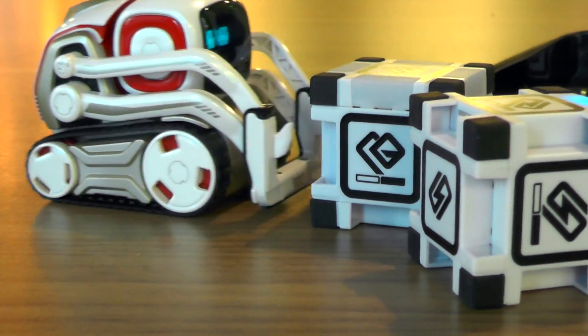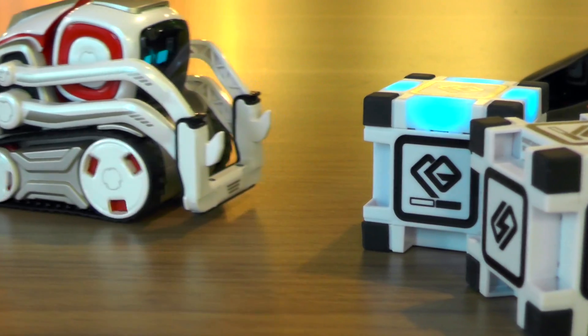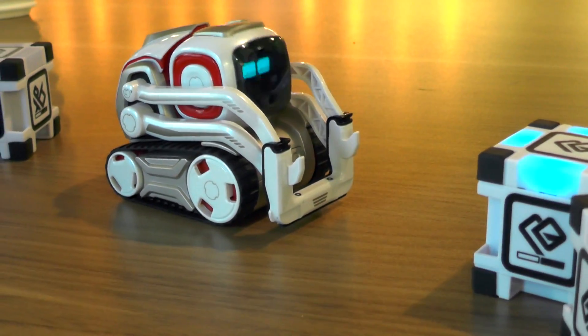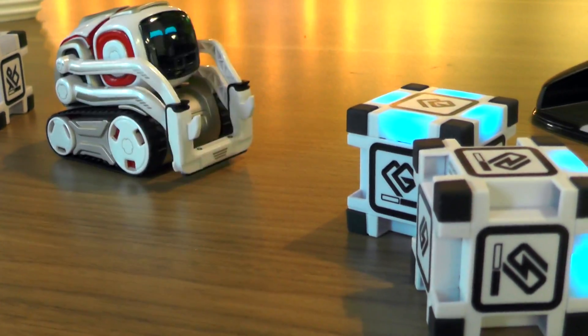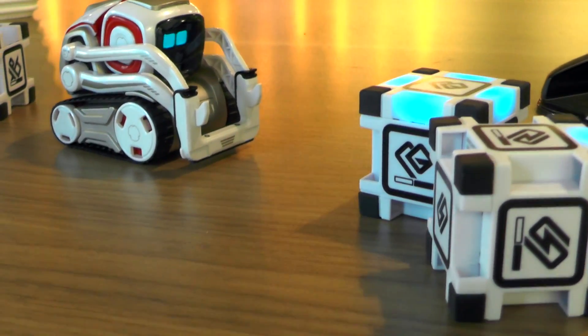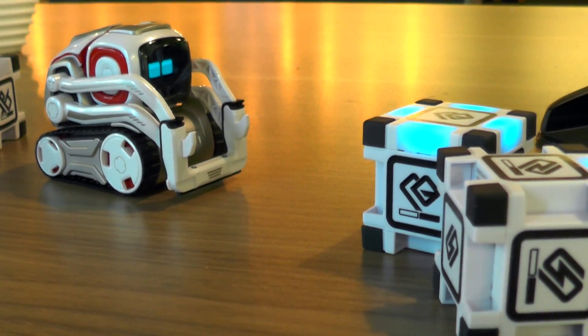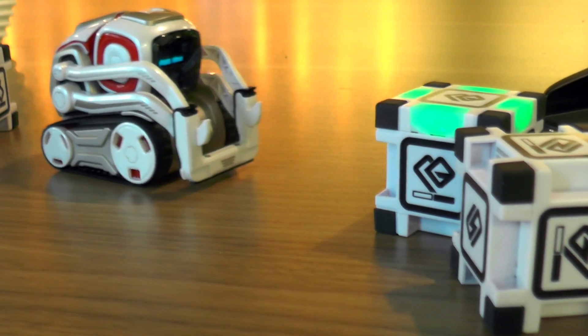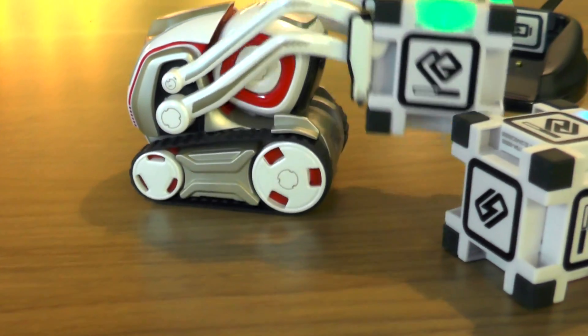The main difference is that Cosmo is really an actual character. He will use a camera to recognize you and remember who you are. If you play a game with him today, he will remember that yesterday at 3 p.m. he played the same game with you.